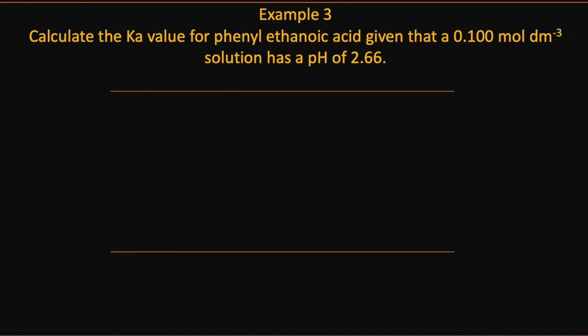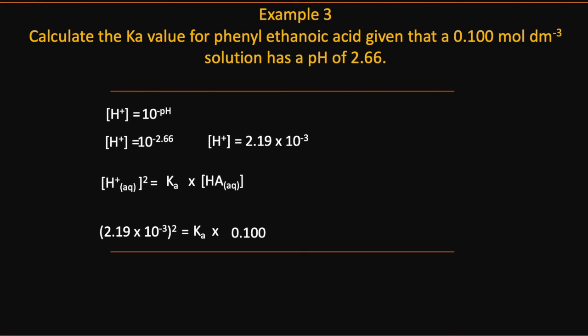Now we're going to calculate Ka for some phenyl ethanoic acid. We've been given its concentration and pH. So again, we can calculate the hydrogen ion concentration. Once we have that, we pop that into our Ka expression. But this time we're going to find Ka because we know the concentration.